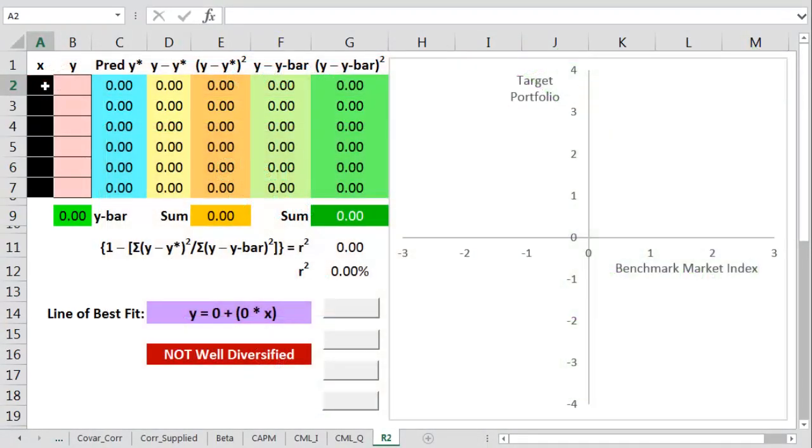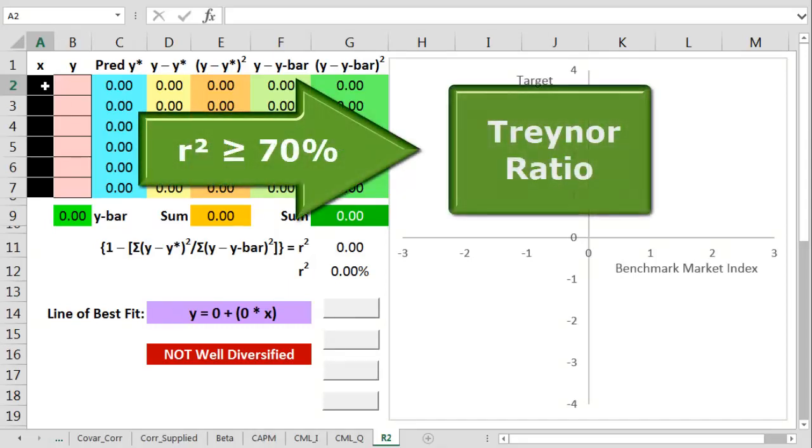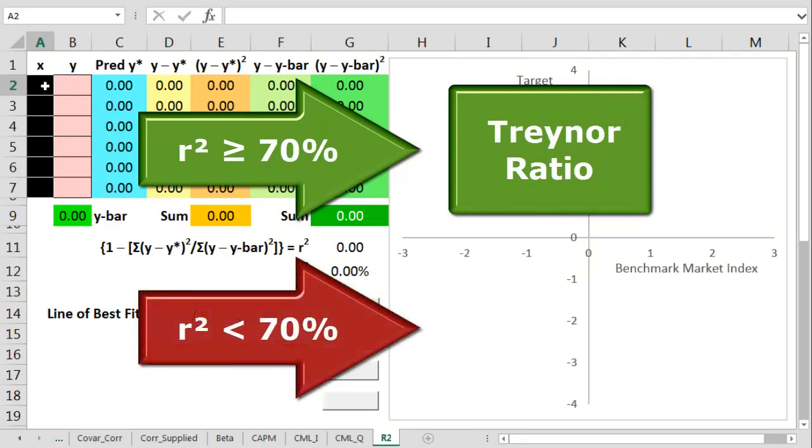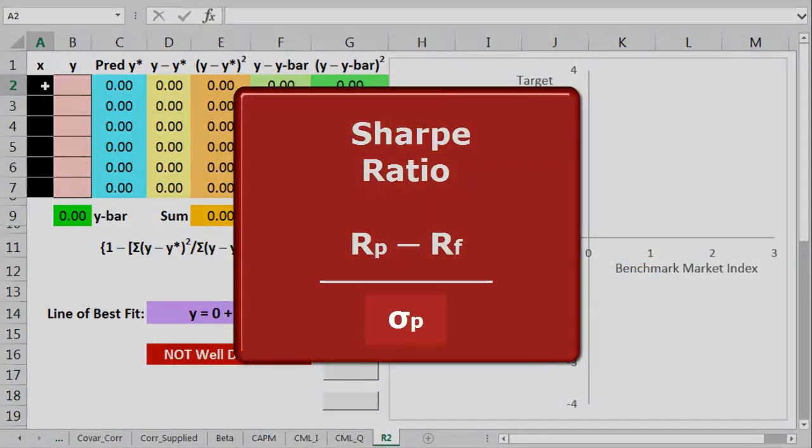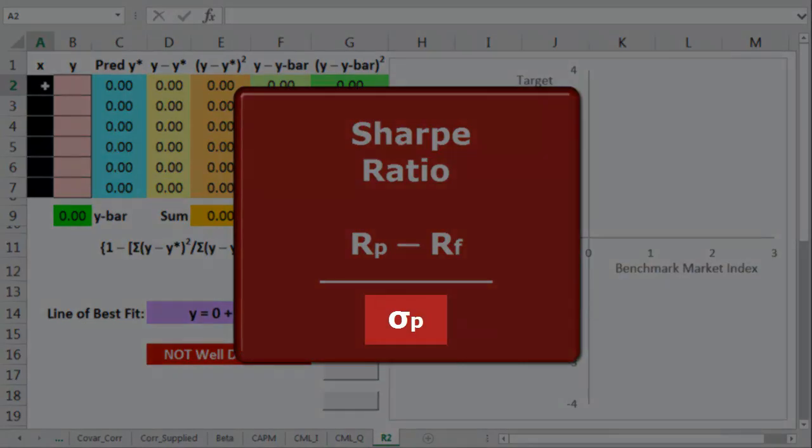we hardly ever need to calculate an R-squared figure, but we do sometimes get it given in ratio analysis questions. We need to remember that above 70% a Treynor ratio is good, but below 70%, a Sharpe ratio might be better. The Sharpe ratio uses total risk rather than just systematic risk.